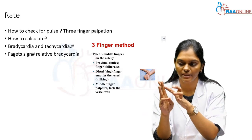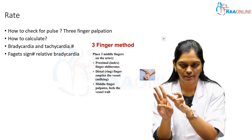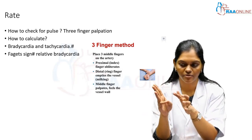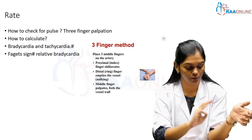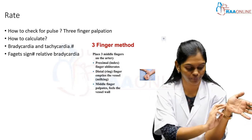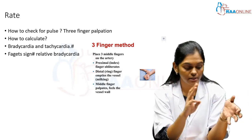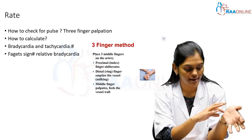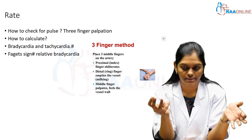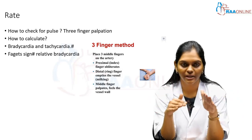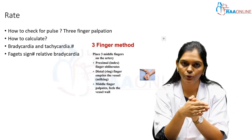The three fingers are the ring finger, the middle finger, and the index finger — the index finger being the proximal finger and the ring finger being the distal-most finger. The index finger obliterates the artery, the middle finger is for palpation, and the distal finger stops the peripheral run-off of blood.